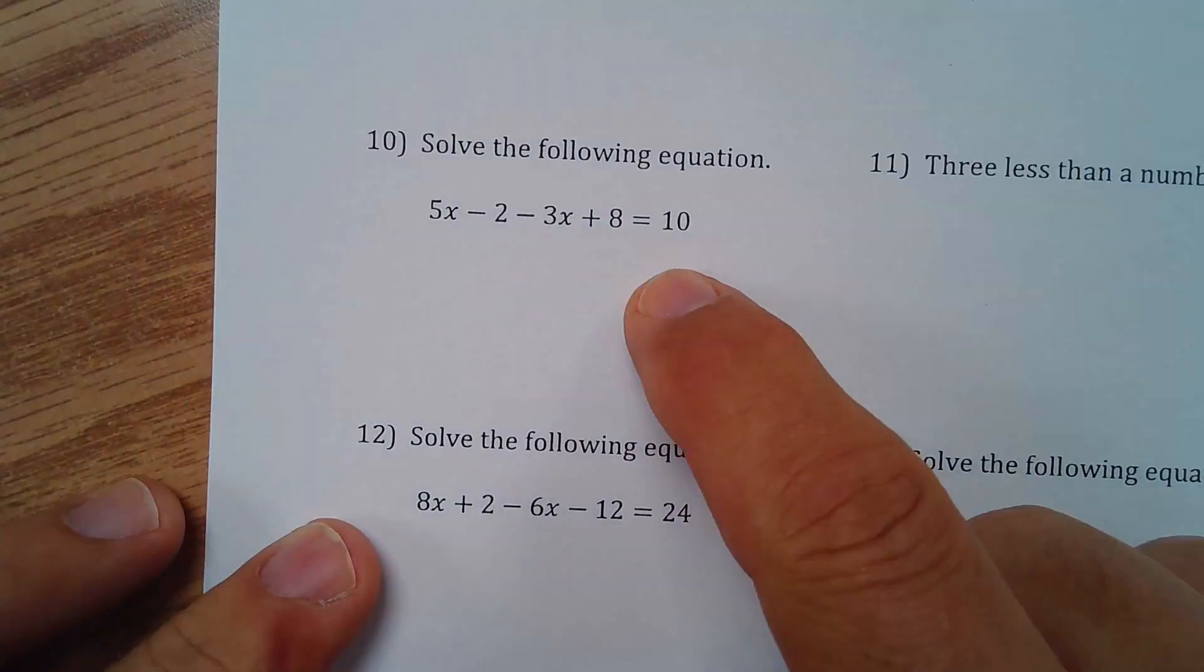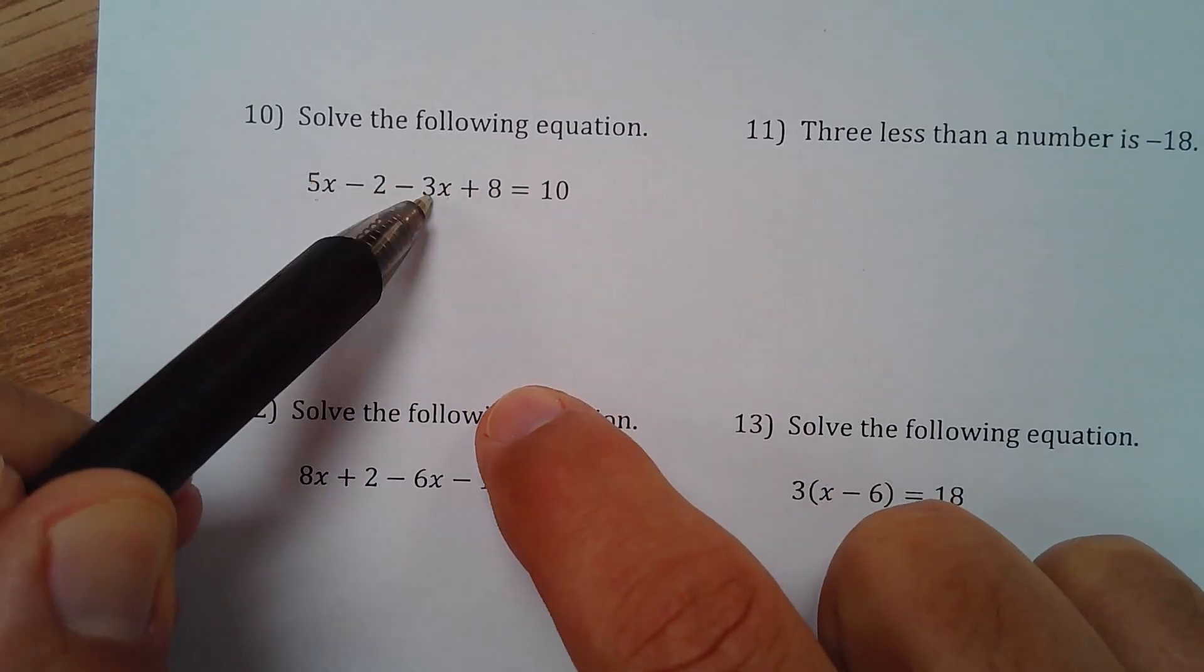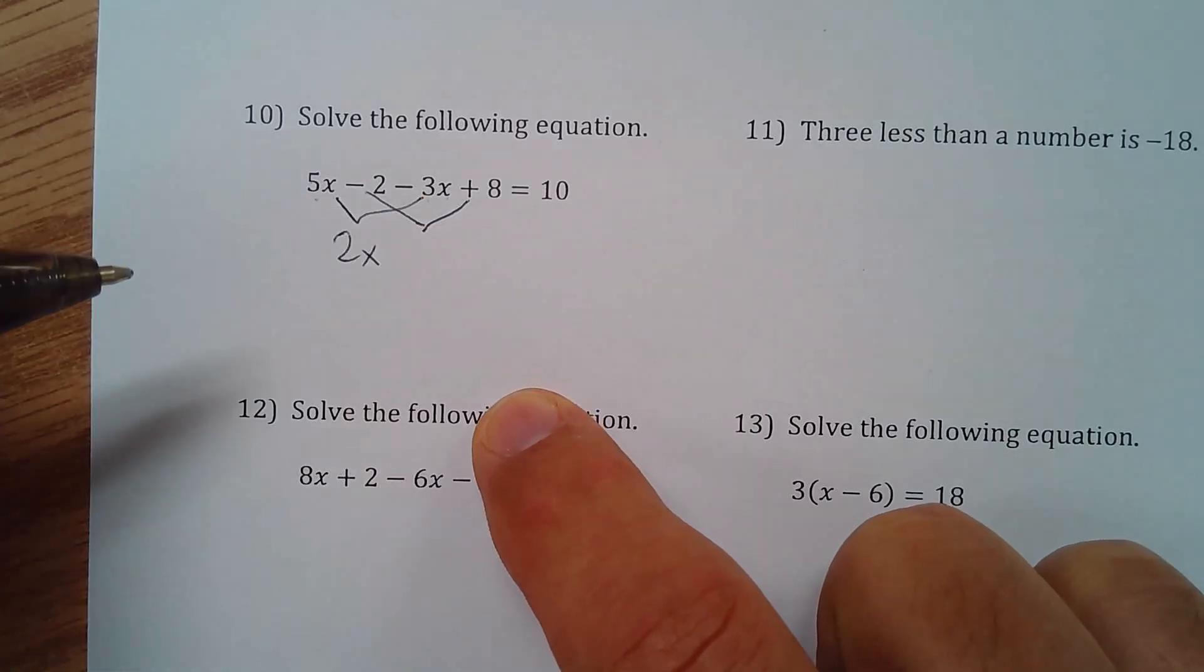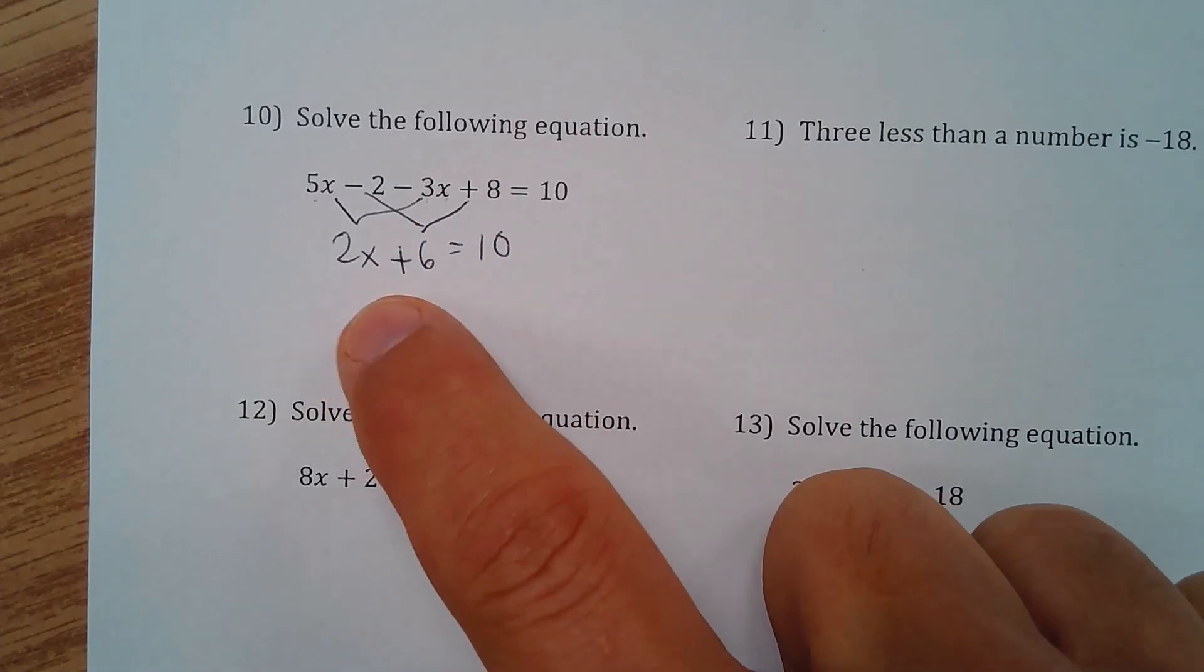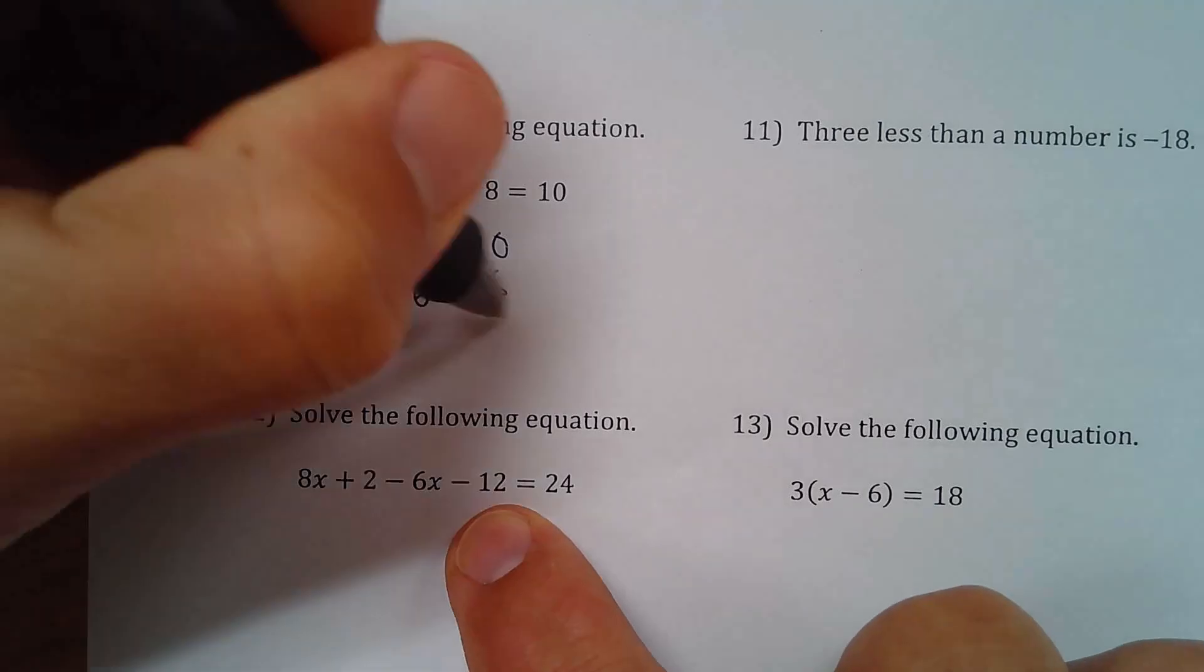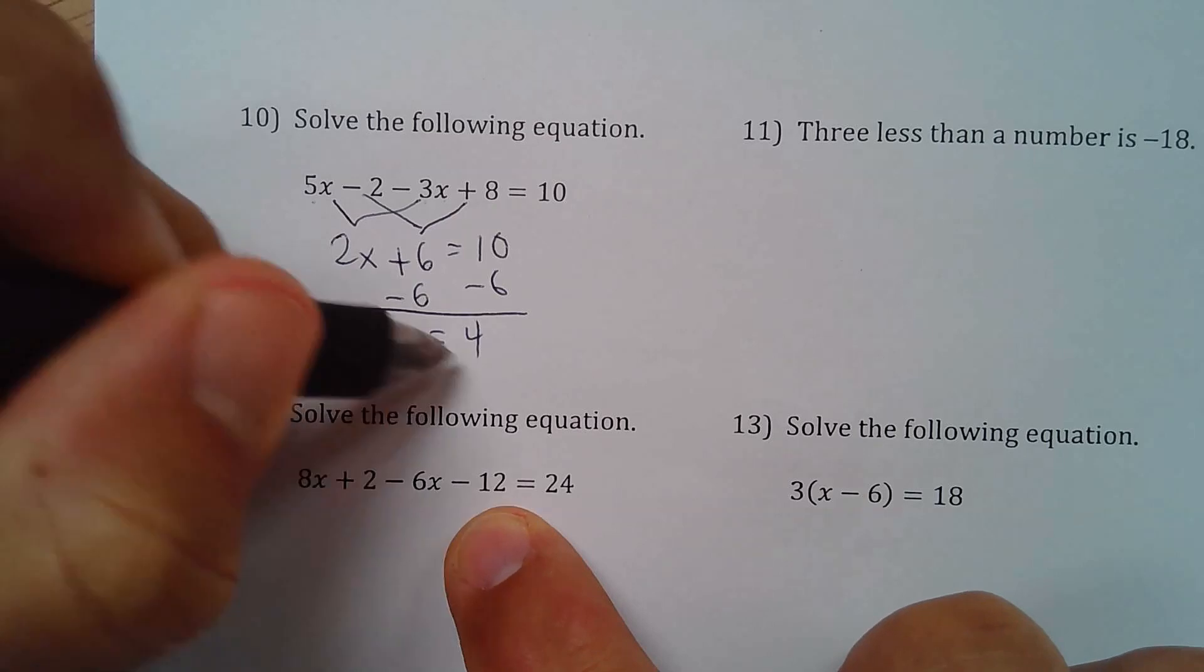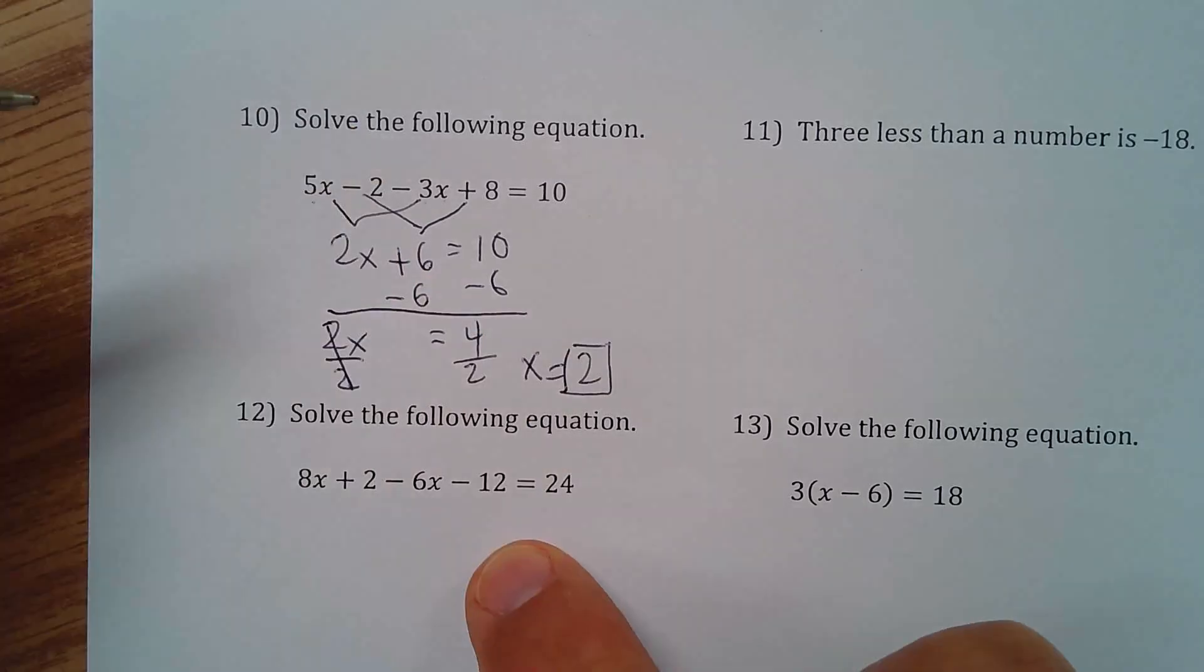Okay. We have a back side. Solve the following equation. Okay. First, what I'm going to do is I'm going to combine my like terms. I have 5x minus 3x. That means I have 2x. And then I have negative 2 plus 8. Negative 2 plus 8 is 6. Positive 6. And then there's 10. Hey. I can do this now. I would use inverse operations again. The inverse of adding 6 is subtracting 6. And I have 2x. And I have 2x equals 4. And since that's multiplication, I have to divide by 2. And x equals 4 divided by 2, which is 2.